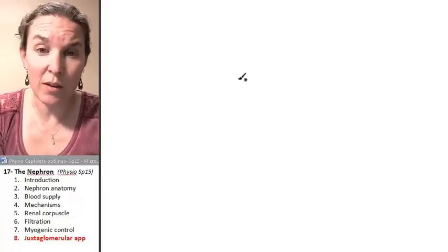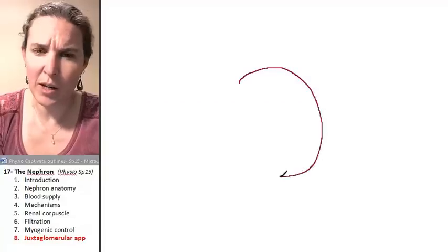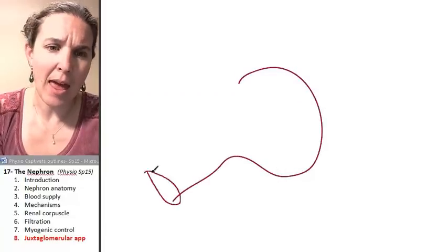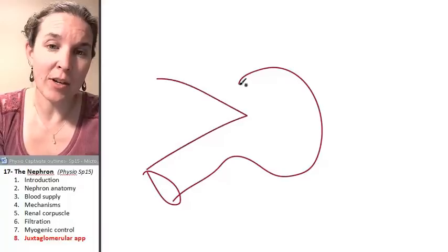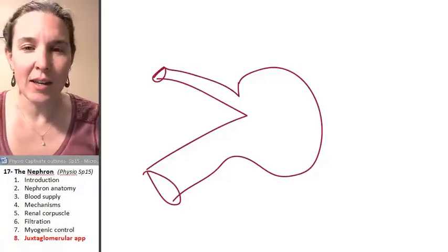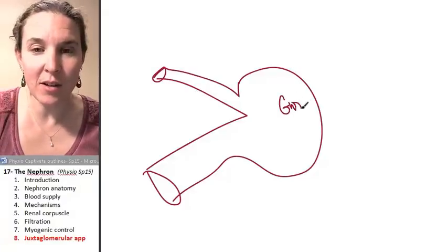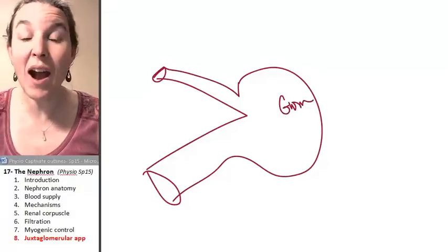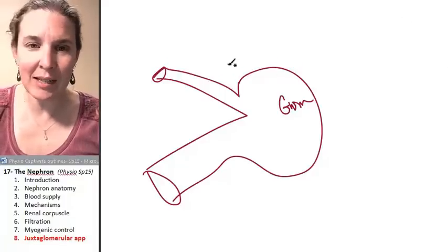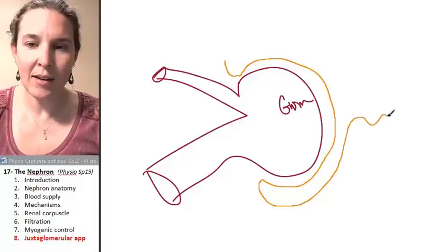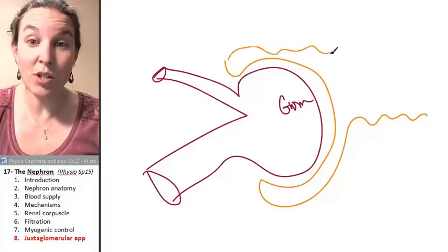We'll draw my glomerulus with my afferent arteriole coming in and my efferent arteriole going out. This is the glomerulus. Remember how I drew my Bowman's capsule was like this, right?